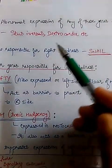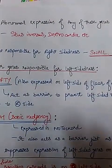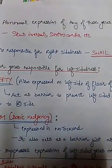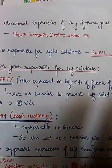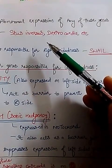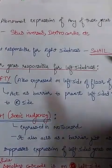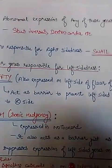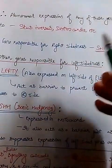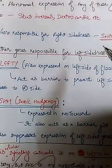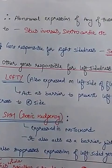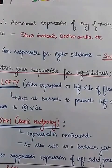Situs inversus involves exchange or sometimes duplication of organ positioning. For example, the heart is normally on the left side, but in dextrocardia — a type of situs inversus — the heart is on the right side. Similarly, the spleen is normally on the left side but can be on the right, and all organs that are normally on the left can be on the right. The gene responsible for right-sidedness is only the snail gene, while lefty and sonic hedgehog also participate in establishing left-sidedness.